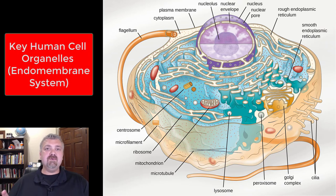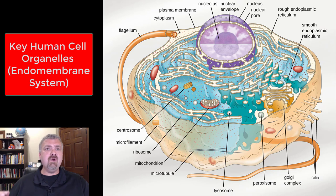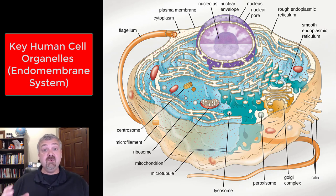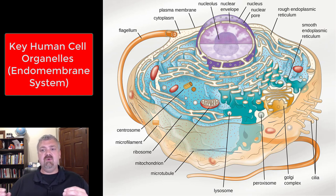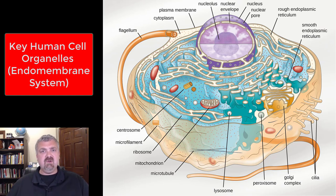Hey everybody, Dr. O here. This video I'm going to walk through some of the key cell organelles in our human cells, especially the ones involved in the production of new proteins and also new plasma membranes. I'm talking about what's known as the endomembrane system. It is the nucleus, connected to the endoplasmic reticulum, which is connected through transport vesicles to the Golgi apparatus, which is then connected to the plasma membrane. It really is one big membrane system within the cell.